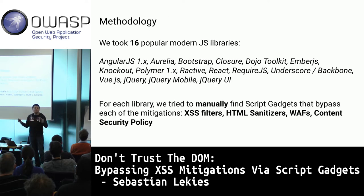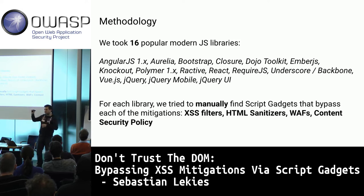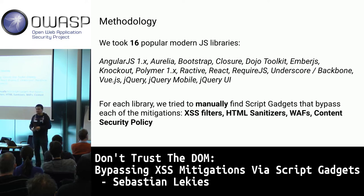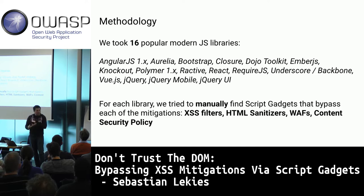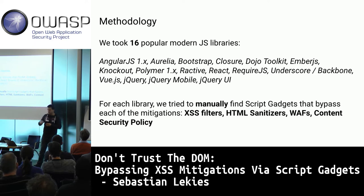We compiled a list of 16 popular libraries by searching GitHub for the most starred and forked repos — Angular, Aurelia, Bootstrap, React, Closure Library, Polymer, and others. For each framework, we tried to find a mitigation bypass for one of four XSS mitigations: XSS filters, HTML sanitizers, web application firewalls, and Content Security Policy.